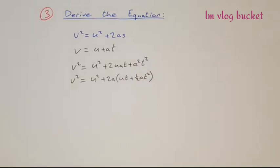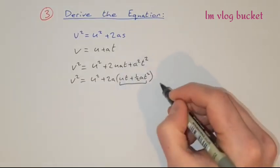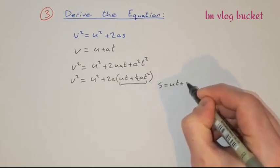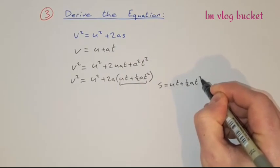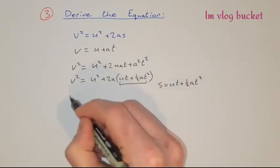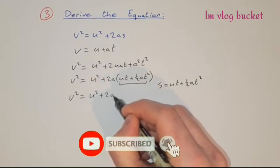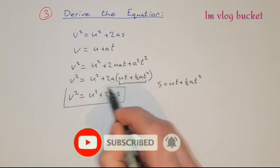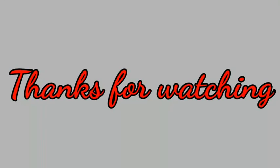We know that ut + ½at² is equal to s, from equation 2. So we substitute that in, and now we have v² = u² + 2as, which is what we were asked to derive in the first place.